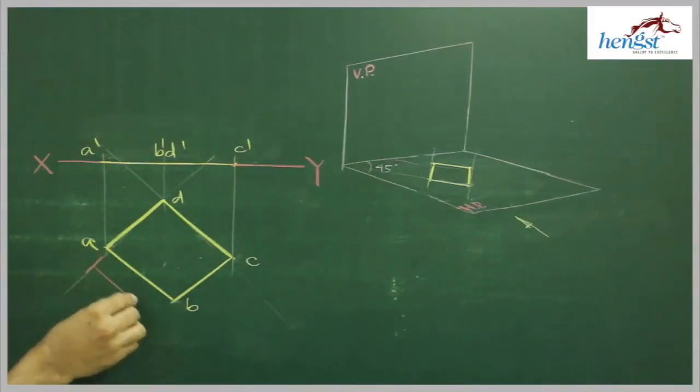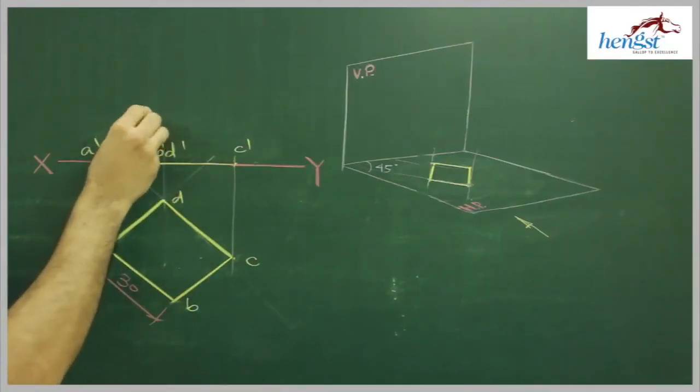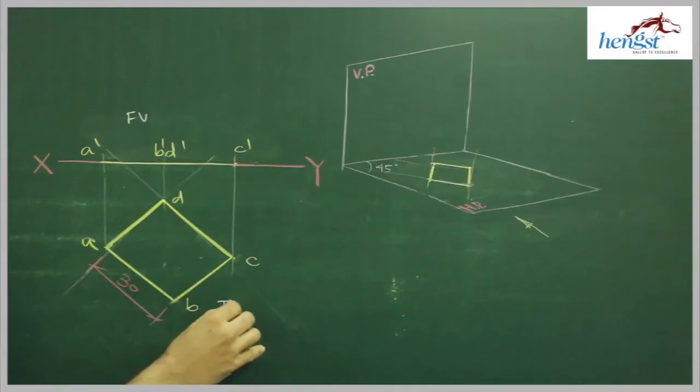Dimension, this side is how much? 30. So we got front view. This is front view of this plane, and this is top view.